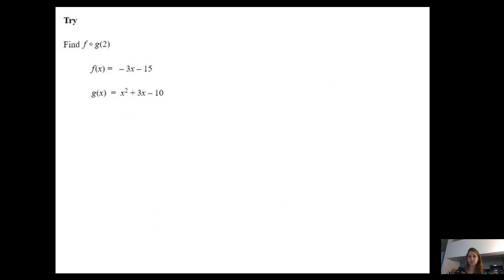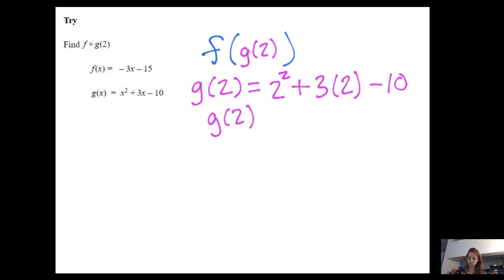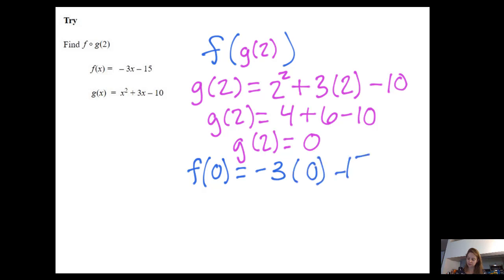Here we have F composed G of two. So in other words, we have F of G of two. We begin with G of two. So G of two equals two squared plus three times two minus 10. G of two equals four plus six minus 10. G of two equals 10 minus 10. So now I have F of zero equals negative three times zero minus 15. So F of zero equals zero minus 15 is negative 15. In other words, I could rewrite the original problem as F composed G of two equals negative 15.